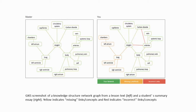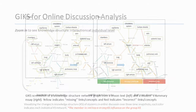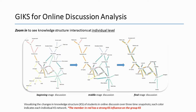My team is now working to embed remedial learning material to address missing or incorrect links. If students click on any yellow or red links highlighted in their knowledge structure network, they will be provided with remedial learning material such as video, text, or questions to support their understanding of the specific relationship between the key concepts. Since this is a web-based application, I also applied this tool to online discussions to take a close look at knowledge structure interaction in discussion.